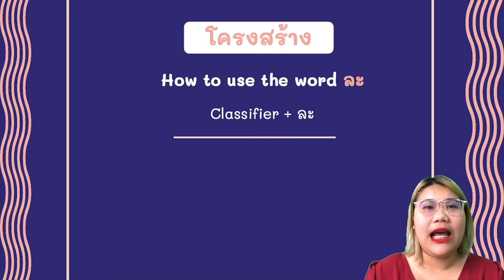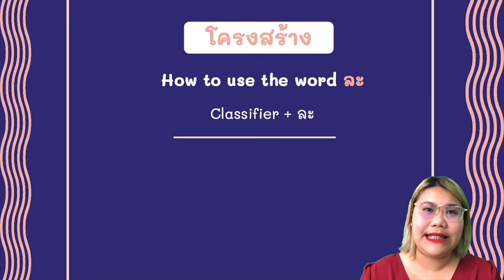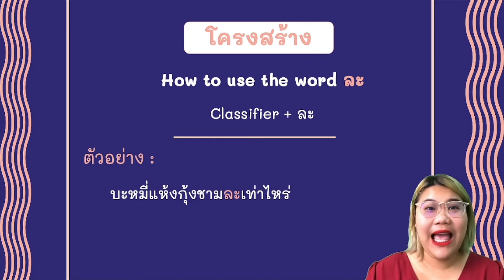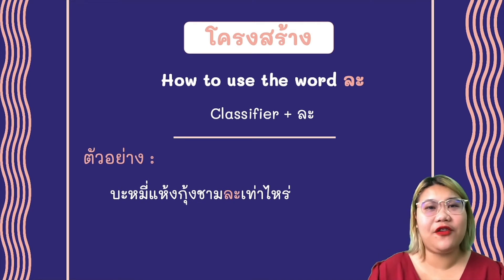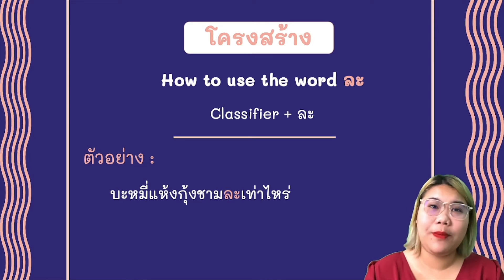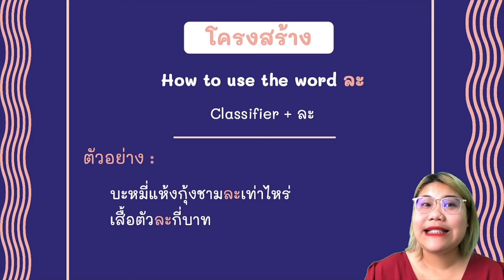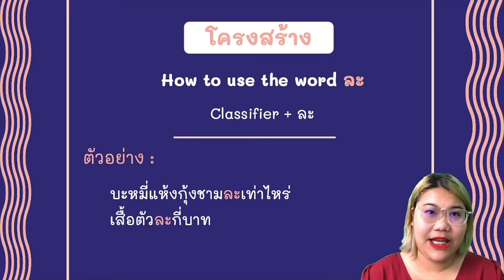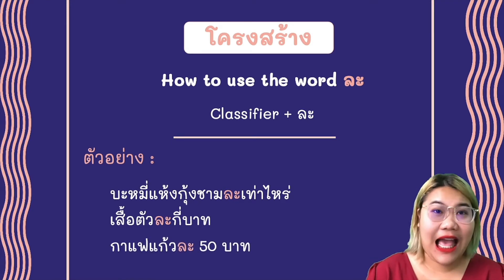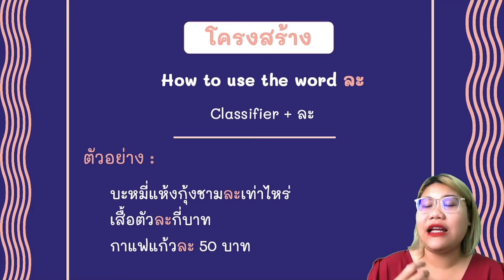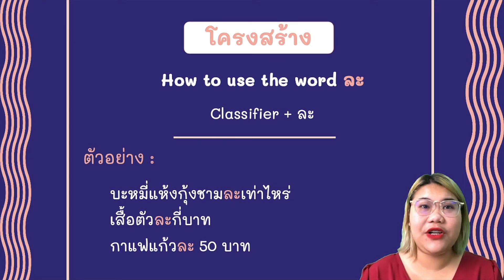The next word is ละ, which means 'per' or 'each.' We say it after the classifier. For example: ชามละ — what is the price per bowl? ชาม is the classifier for bowl. เสื้อตัวละ — เสื้อ is the shirt, and ตัว is the classifier for an item of clothing. And กาแฟ แก้วละ ห้าสิบบาท — กาแฟ is coffee, แก้ว is the classifier for glass, so coffee per glass is 50 baht.